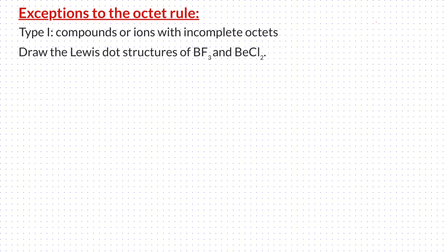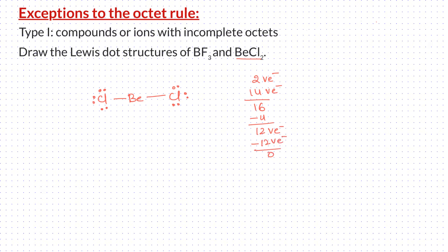Let us now draw the Lewis dot structure of beryllium chloride. Beryllium goes in the center, with chlorines on the sides. Beryllium has 2 valence electrons and each chlorine has 7, so in total we have 16 valence electrons. I connect the central atom to the terminal atoms by single bonds, using up 4 electrons, so I have 12 valence electrons remaining. I am going to place these 12 valence electrons on the terminal atoms as non-bonding electron pairs, using all of them. Checking each atom: the central atom beryllium has only 4 electrons — that is, 4 electrons short of octet configuration.